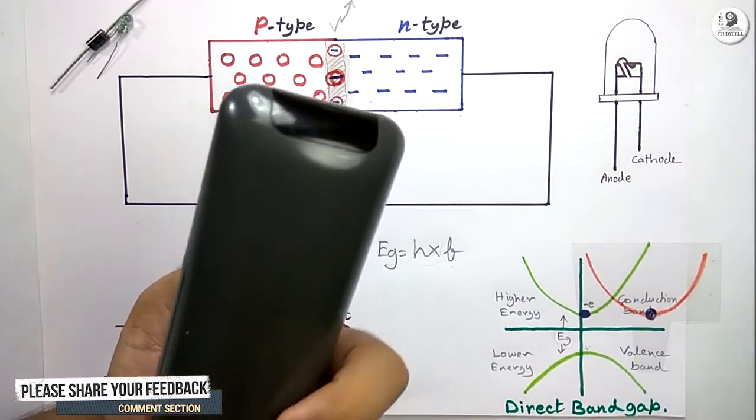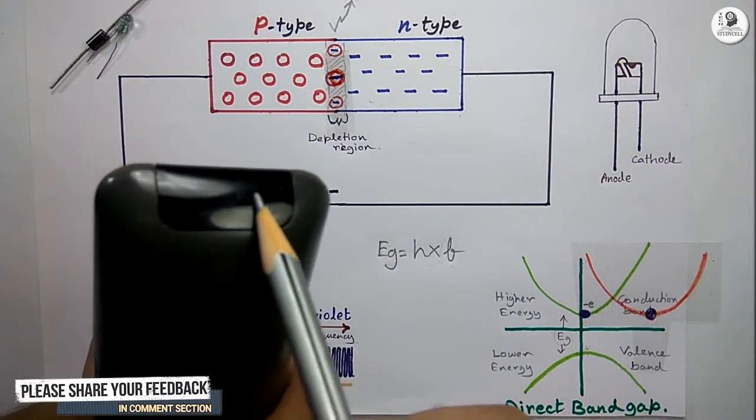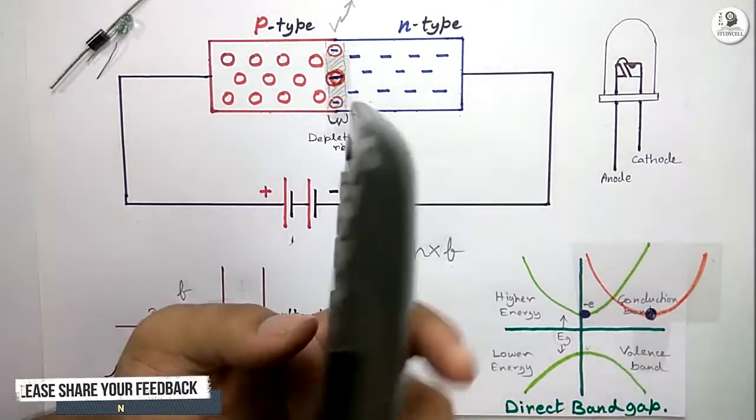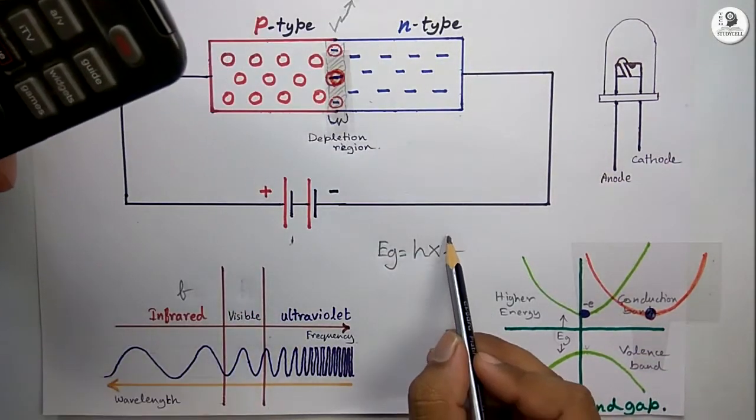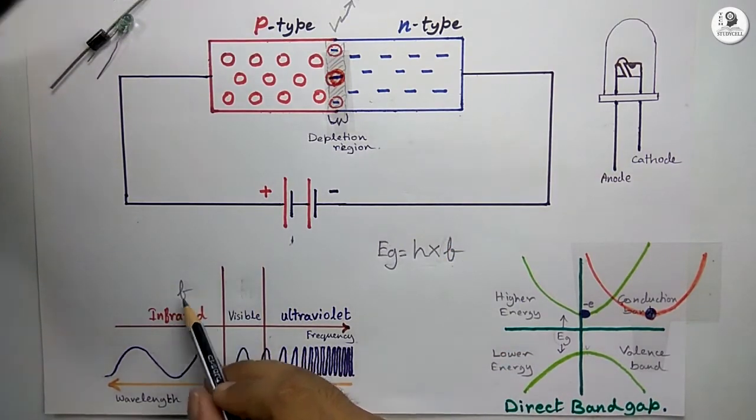For this TV remote control, if I press any button, you cannot see any light here, as they have used infrared LED. So here the frequency is within the infrared region, the light is not visible to us.